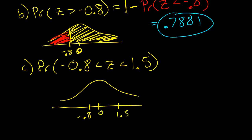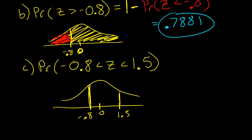Last question: the probability that z is between negative 0.8 and positive 1.5. Zero is the center of the distribution. Negative 0.8 is to the left of zero and positive 1.5 is to the right, so I want to find the area between these two values, marked in yellow.